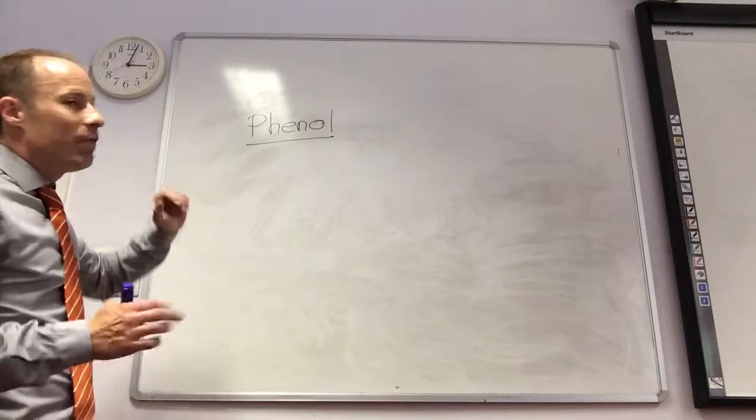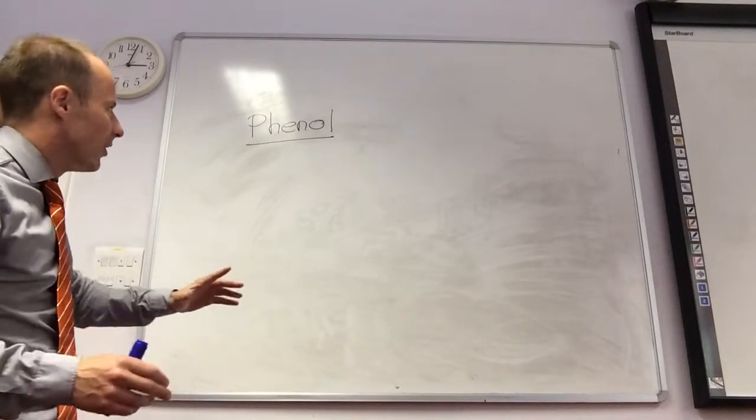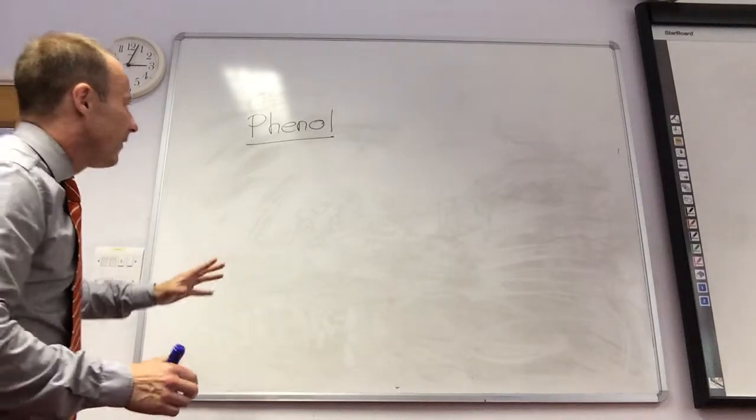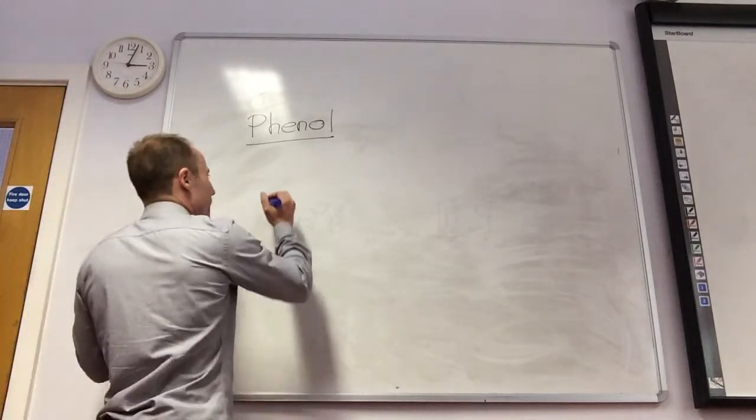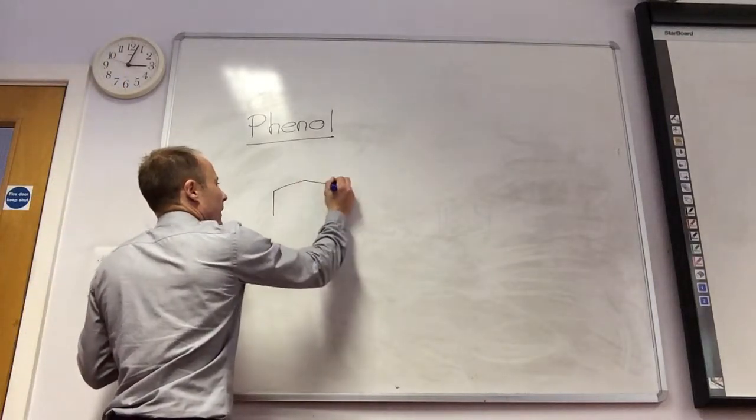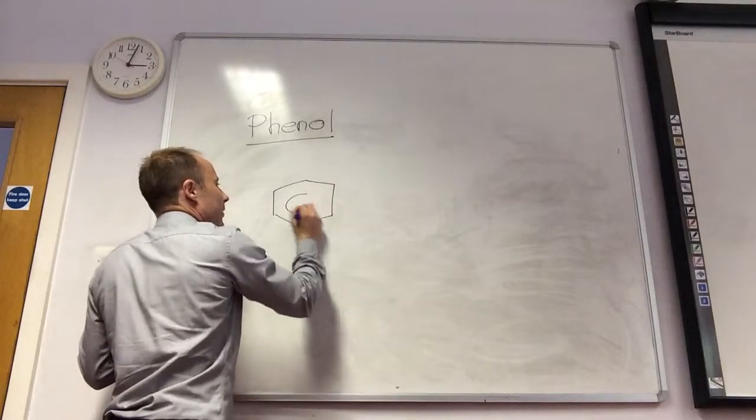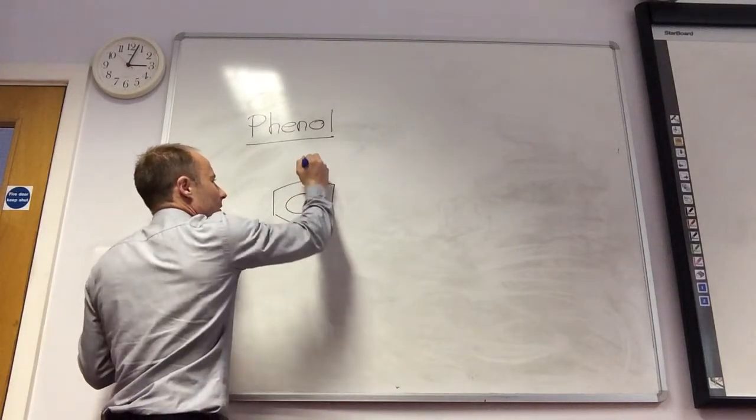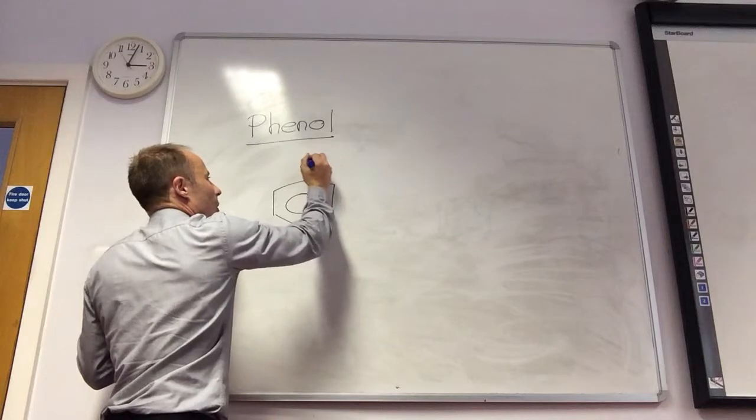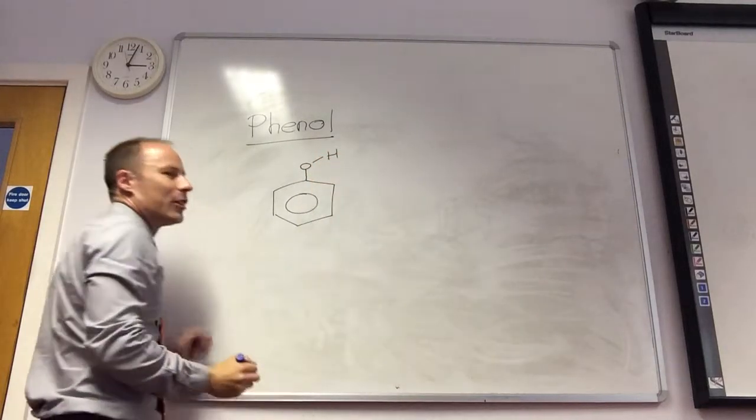So phenols are going to be the final topic in this area of chemistry. If I draw out what phenol looks like, I'm sure you'll be excited. It's got a benzene ring, you have oxygen and a hydrogen.